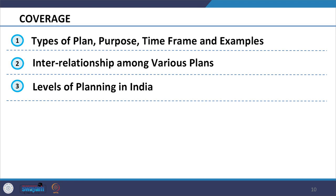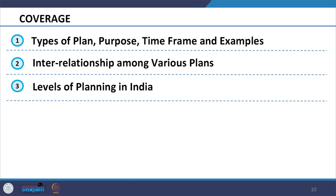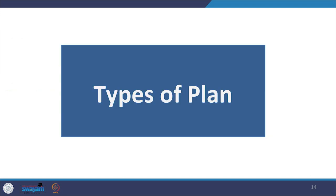The session will also cover the interrelationship among various plans and levels of planning followed in India. The expected learning outcomes include that after completion of this session, you should be able to identify and name different types of plan, discuss its purpose, timeframe and support with examples. You should be able to explain the interrelationship among various plans and list various levels of planning in India.